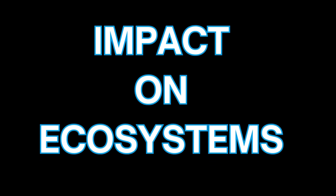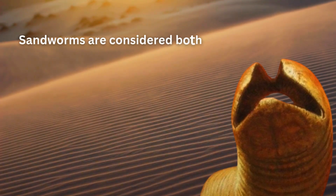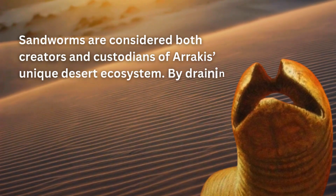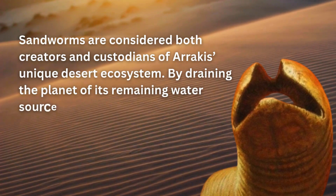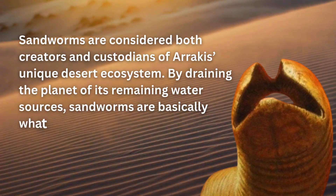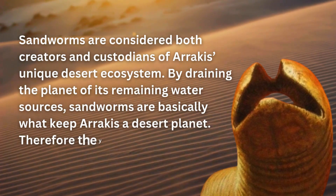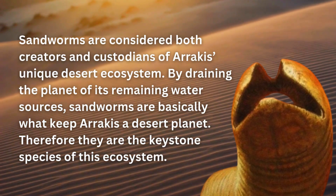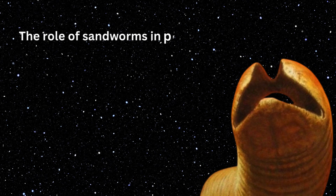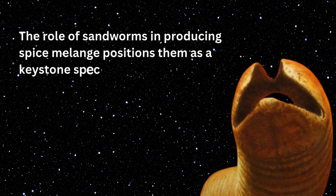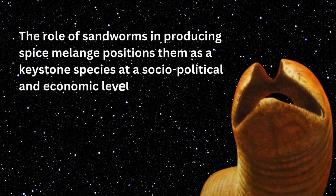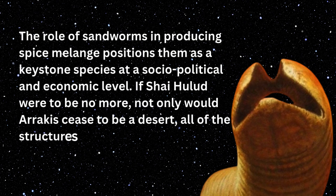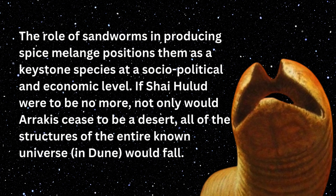Impact on Ecosystems. Sandworms are considered both creators and custodians of Arrakis' unique desert ecosystem. Sand trout encapsulate water, and when they were introduced by the muadru, they drained Arrakis of the rest of its available water resources. Therefore, sandworms are basically what keep Arrakis a desert planet, positioning them as a keystone species of this ecosystem. Their role in producing spice melange also positions them as a keystone species at a socio-political and economic level — for if Shai-Halud were to be no more, not only would Arrakis cease to be a desert planet, all of the structures of the entire known universe in Dune would fall.